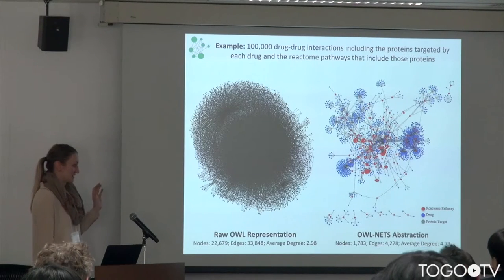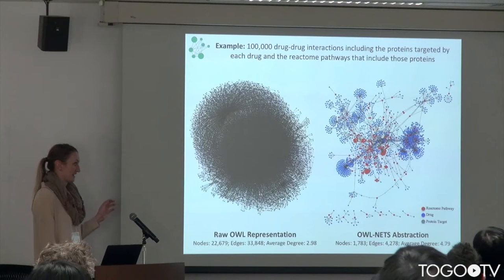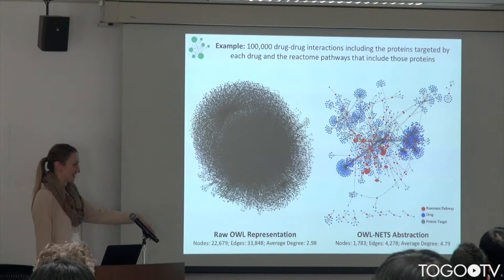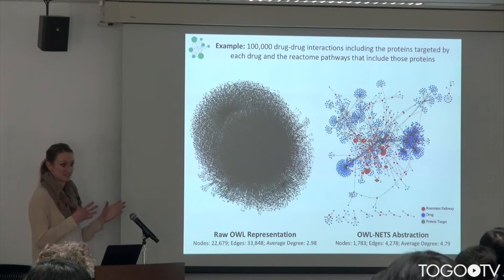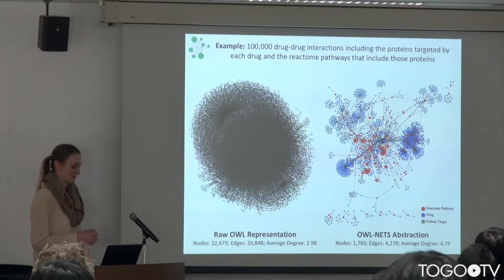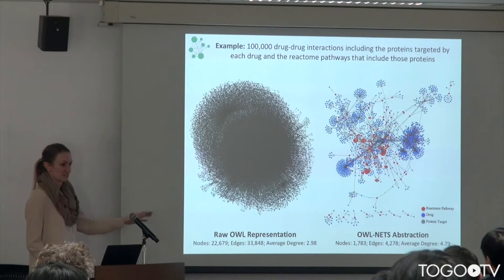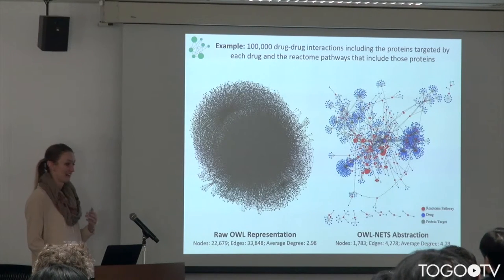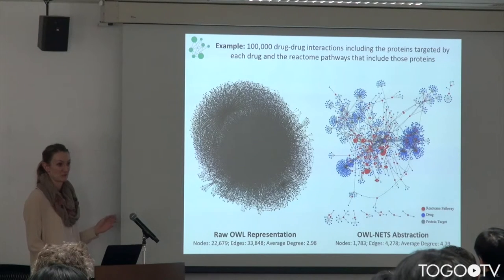This is meant to show that whereas this is still a bit more complicated, you can start to see patterns and you can start to see different relationships that may be interesting. And we've done inference over this as well. So we can take these NETS abstractions and run different kinds of network inference over them that you normally wouldn't be able to do with the OWL representation.